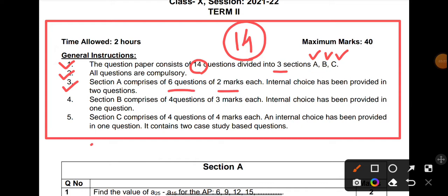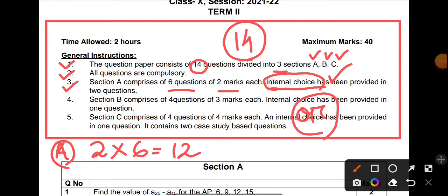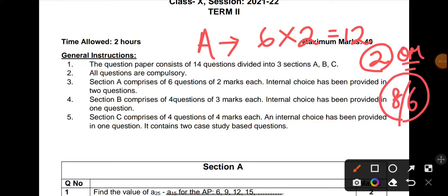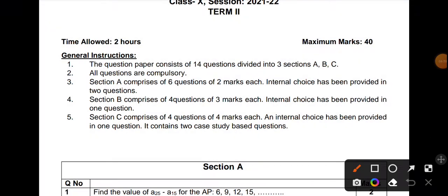Then talking about Section A, Section A comprises of 6 questions of 2 marks each. Meaning in Section A you'll get 6 questions worth 2 marks, so your total marks will be 12 marks from Section A. Is that clear? Internal choice has been provided in two questions. So OR will be given - not that you have to choose from 8 questions, but there will be 2 questions where you'll get an OR, an internal choice. All 6 questions have to be done, but in each of those 2 questions you'll get an internal choice.